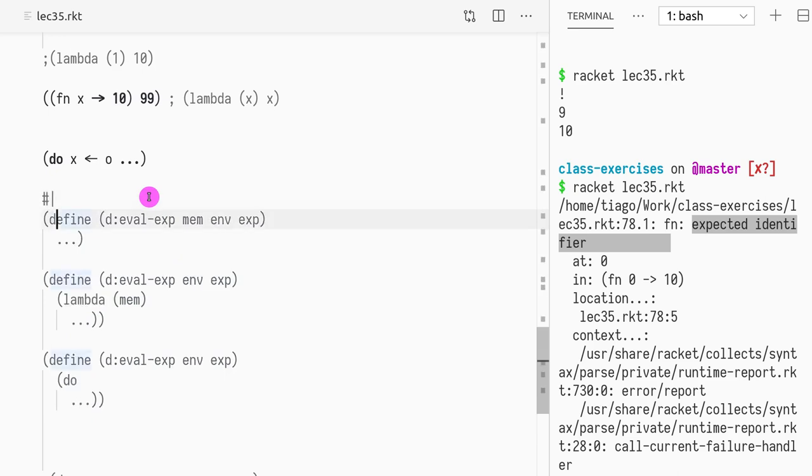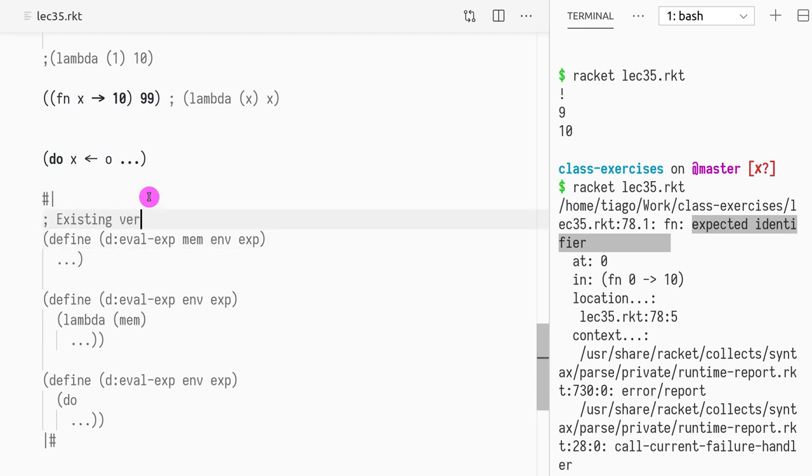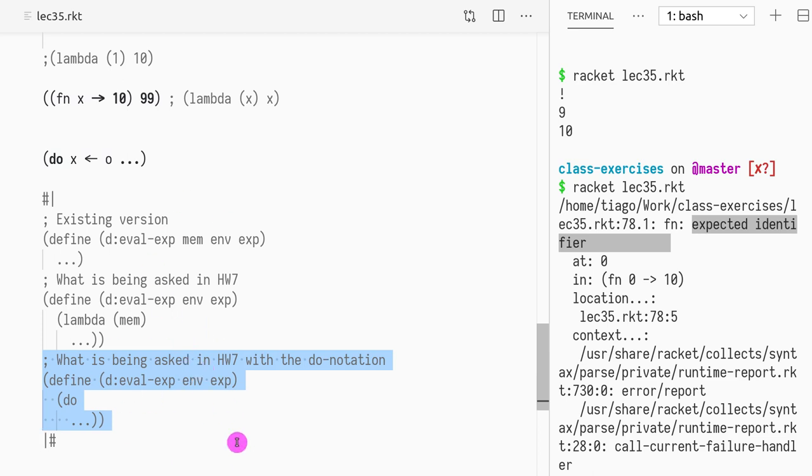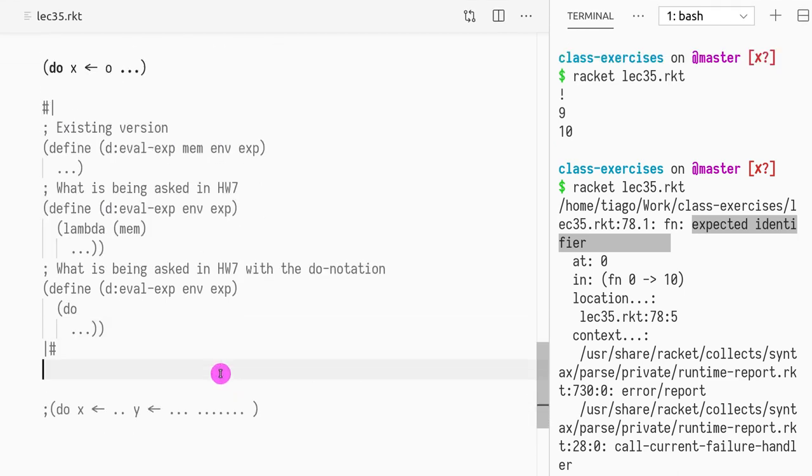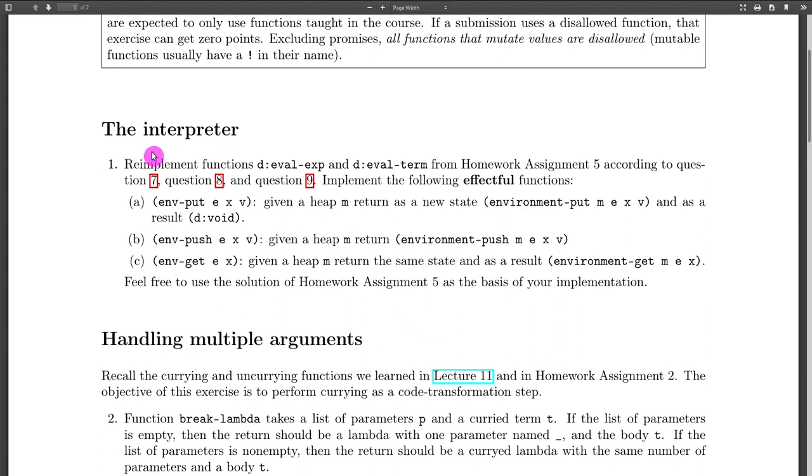Let me comment this out. This is the existing version. What is being asked in homework seven? This is what is being asked in homework seven with the do notation. Of course, the version with the do notation is what I hope you are going to do, because that is generally less code, will be way shorter. It's mostly deleting code from your homework five.